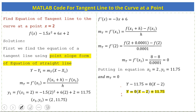We put the slope of the tangent line into the point-slope equation: y = 0·(x - 2) + 11.75. This is the equation of the tangent line. Now we write a MATLAB code on the same pattern.